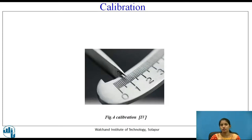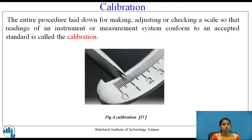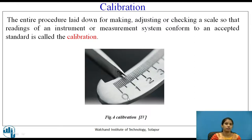Calibration. Can you tell me what is calibration? Calibration is comparing measurements with the standards. The entire procedure laid down for making, adjusting, or checking a scale so that readings of an instrument or measurement system confirm to an accepted standard is called calibration. Figure 4 shows calibration. Instruments need to be calibrated at equal intervals of time so that the readings given by the instruments are accurate.